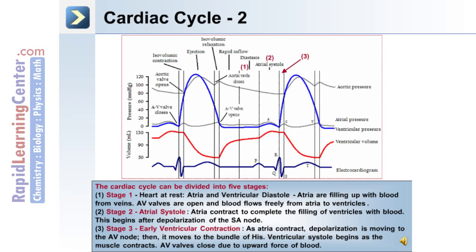Stage 3 is early ventricular contraction. As the atria contract, depolarization is moving to the atrioventricular node, then it moves to the bundle of His. Ventricular systole begins as muscle contractions. The atrioventricular valves close due to the upward force of blood.